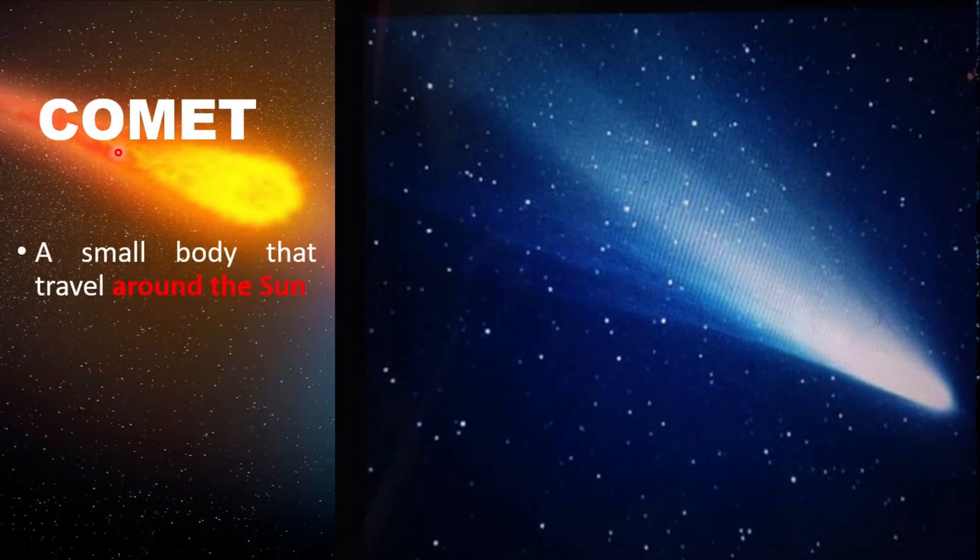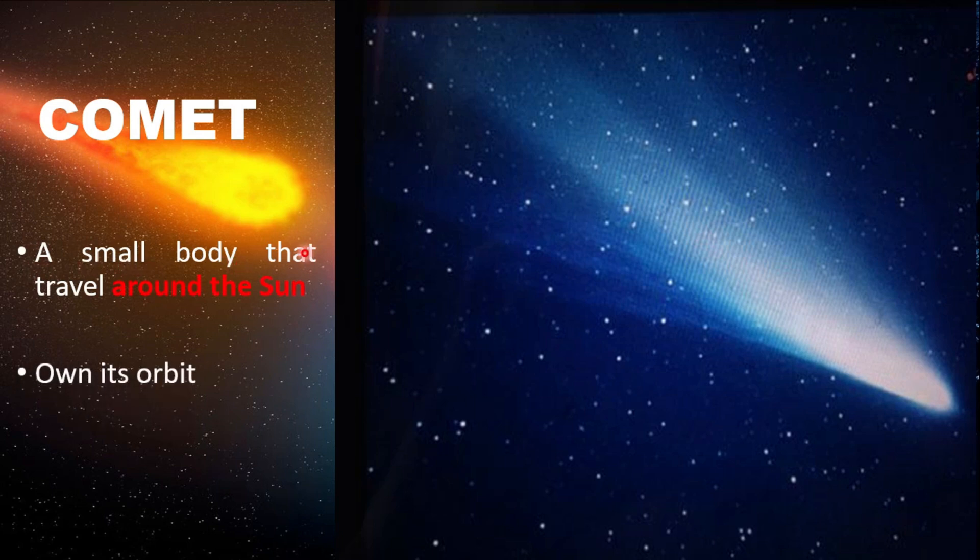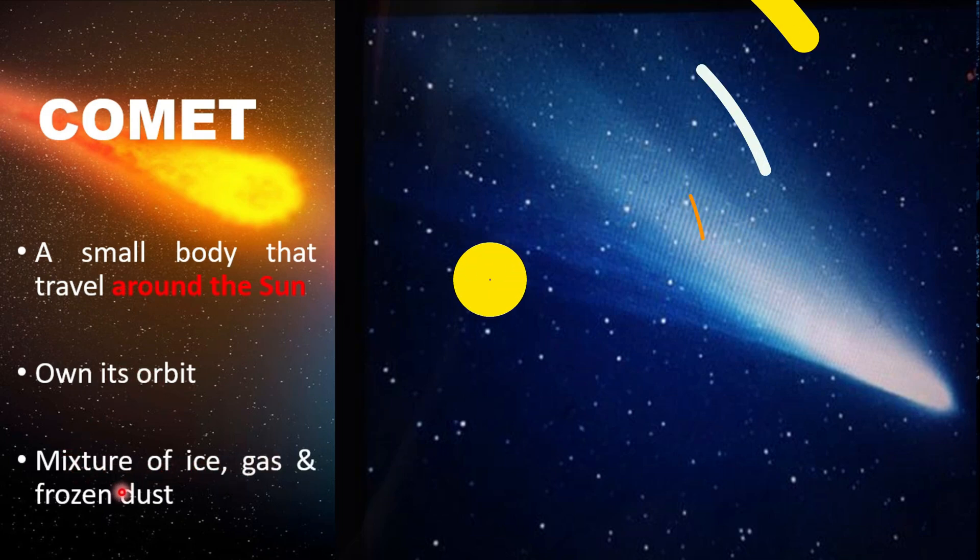What is a comet? It is a small body that travels around the Sun, it has own orbit, and it is a mixture of ice, gas, and frozen dust.